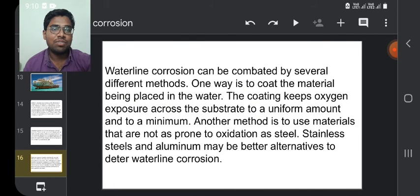Waterline corrosion can be combated by several different methods. One way is to coat the material being placed in the water. The coating keeps oxygen exposure across the substrate to a uniform amount and to a minimum. Another method is to use materials that are not as prone to oxidation as steel. Stainless steels and aluminum may be better alternatives to resist waterline corrosion.